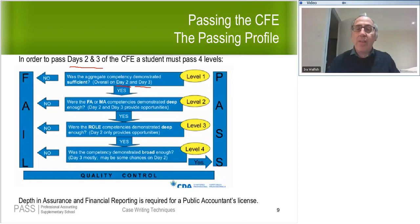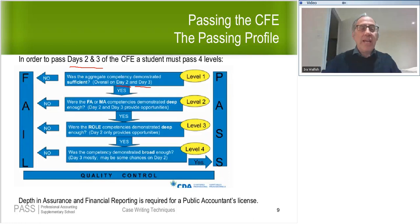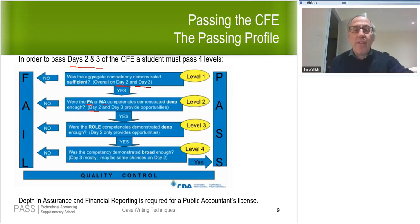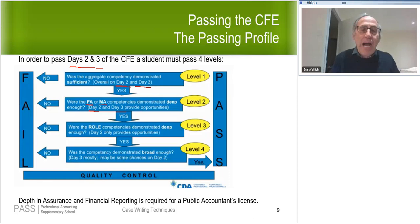Level two of the passing profile focuses on financial accounting and management accounting. It asks: were the financial accounting or management accounting competencies demonstrated deep enough? They look at your performance in those areas across both days two and three, counting only how many times you got competent — reaching competent is ignored for this level. You need to get competent a sufficient number of times in at least one of these two areas: financial accounting or management accounting.